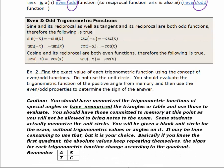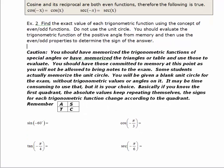Pause the video and evaluate more expressions using your knowledge of the special angles and the even-odd properties of the trigonometric functions. Since sine is odd, the sine of a negative angle equals the opposite of the sine of the positive angle — so the sine of negative 60 degrees will be negative, and sine of 60 degrees should be memorized. The cosine of a negative angle equals the cosine of the positive angle because cosine is even, so the cosine of negative π/3 equals the cosine of π/3, which is one half.